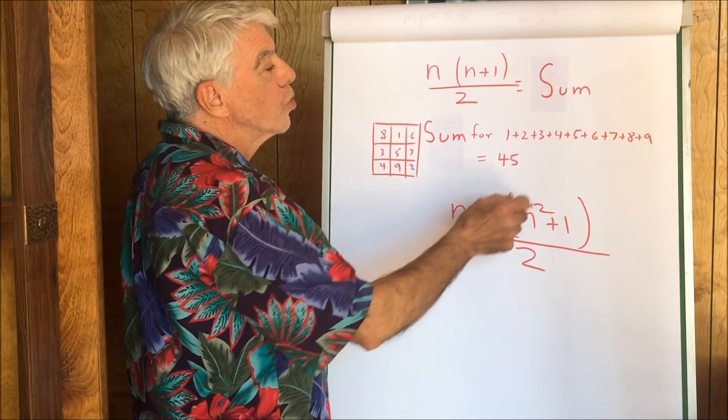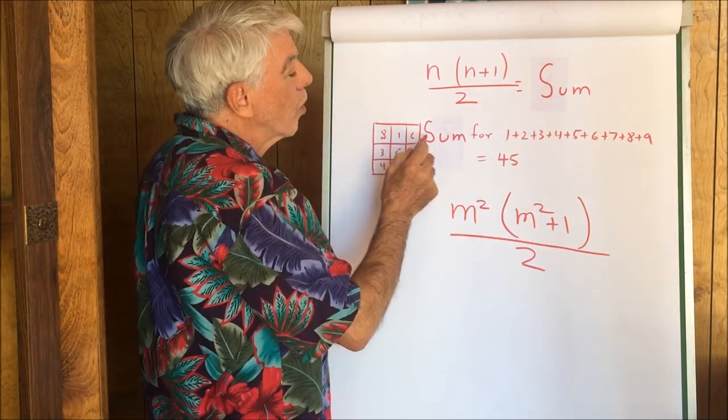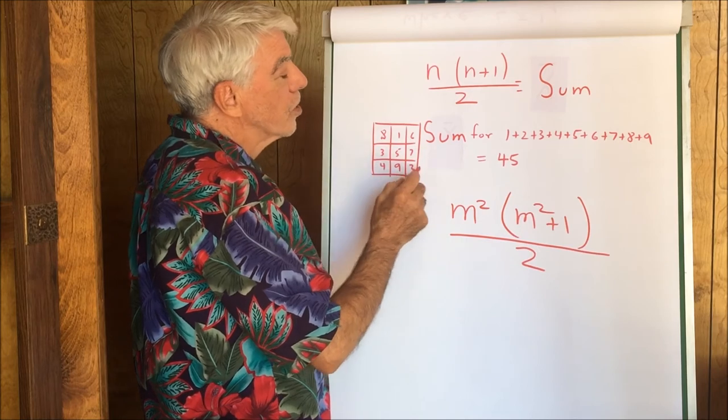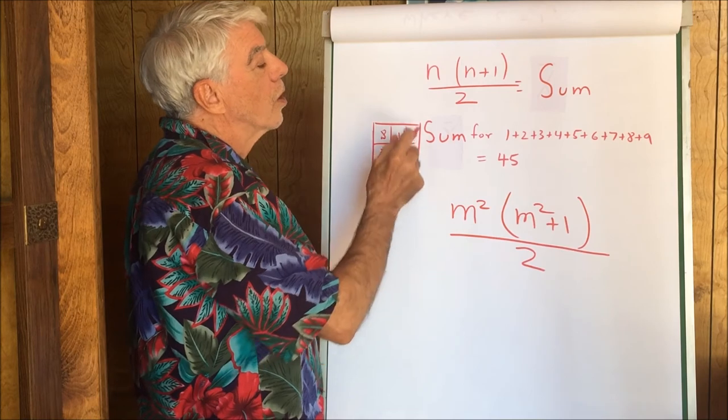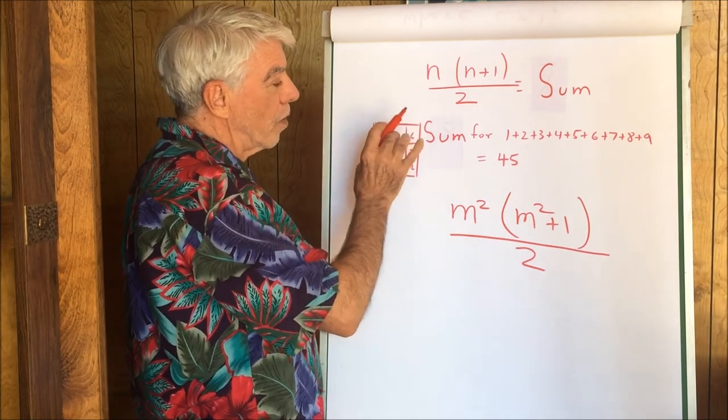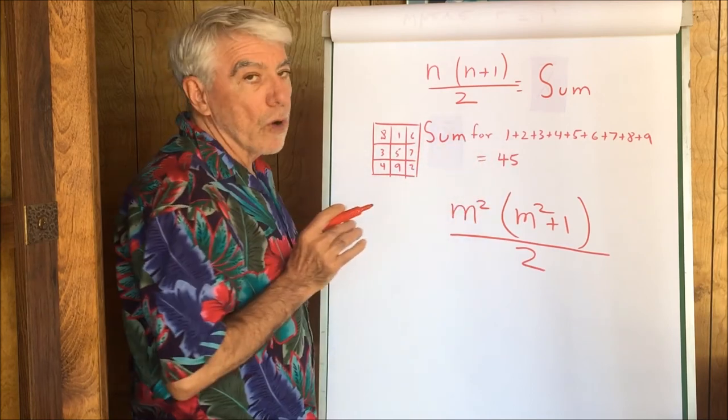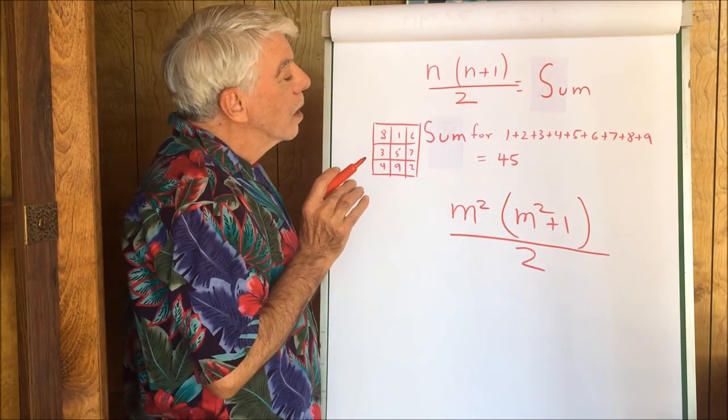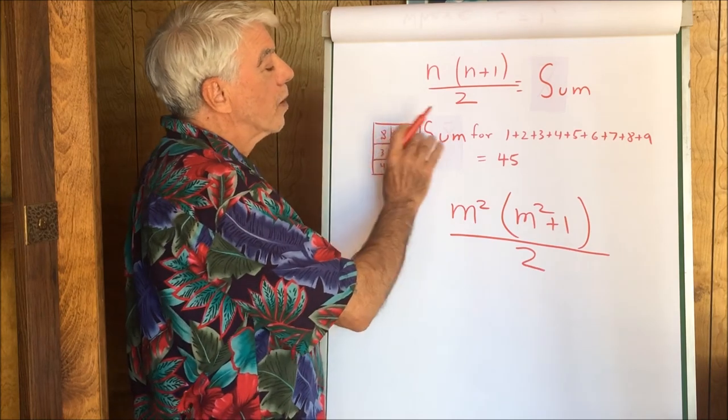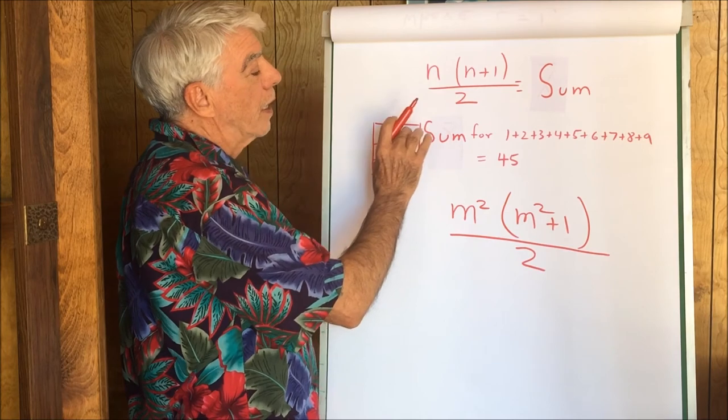Now, this was the sum for all the digits. This row, this row, and this row include all the digits. So the sum of these three rows together must equal 45. But we don't want the sum of the whole thing. We want the sum of this row.